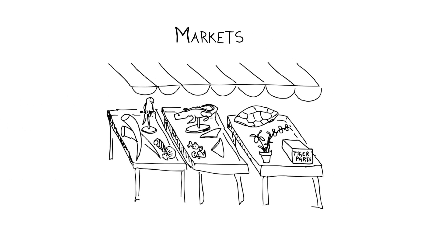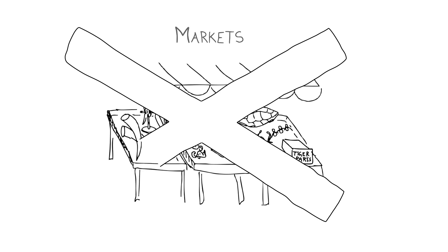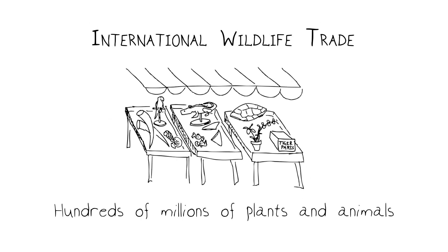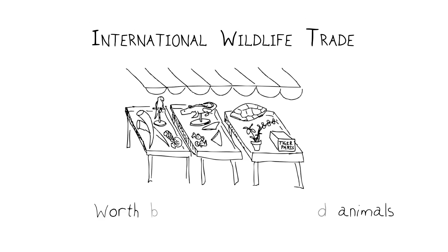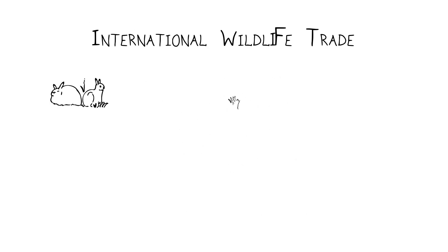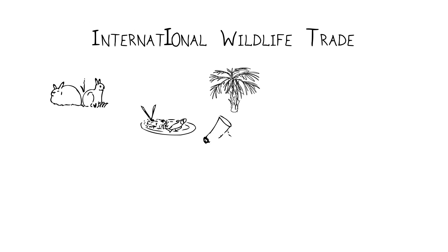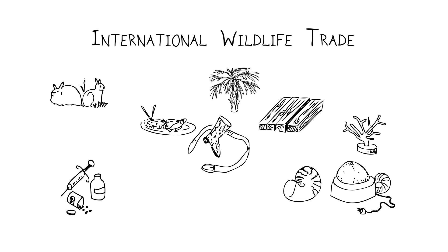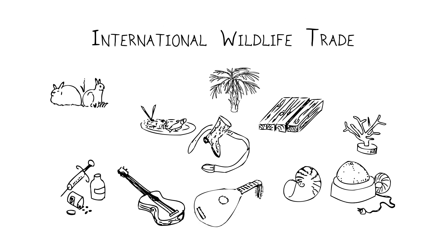In some cases, a species is so threatened that a complete ban on its trade is required. International wildlife trade is estimated to involve hundreds of millions of individual plants and animals, resulting in a market worth billions of dollars a year, so it's not a small problem. It ranges from live animals and plants to products derived from organisms such as food, leather goods, timber, curios, medicines, and even wooden musical instruments.